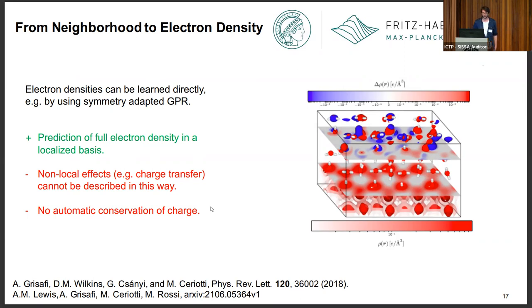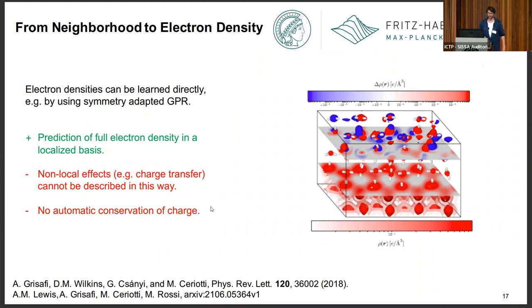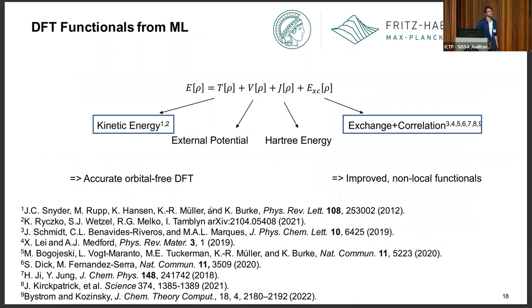If your system is somehow inhomogeneous and there are long-range effects — in particular if there's charge transfer, with regions of different electronegativity — then this local model has no way of knowing about this, which can be an issue. Also, there's no automatic conservation of charge, though in practice I'm told this isn't a big problem. However, I think this only works well for homogeneous systems. If your system is supposed to be negatively charged in one place and positively charged in another, these models will not get this right.